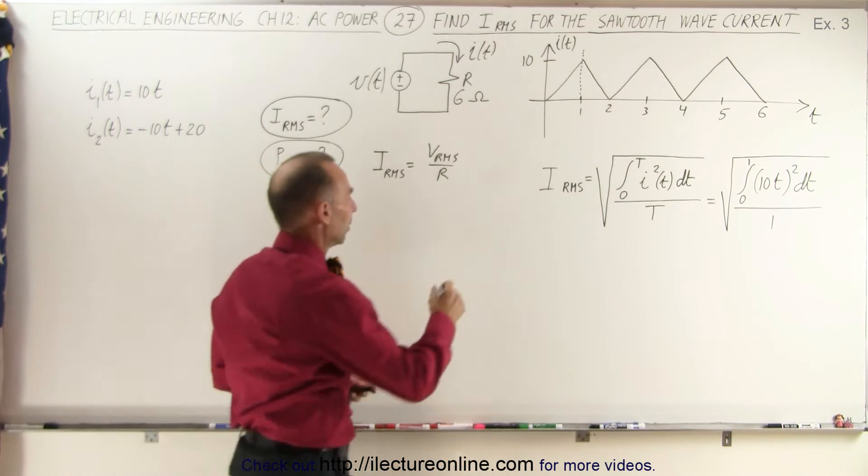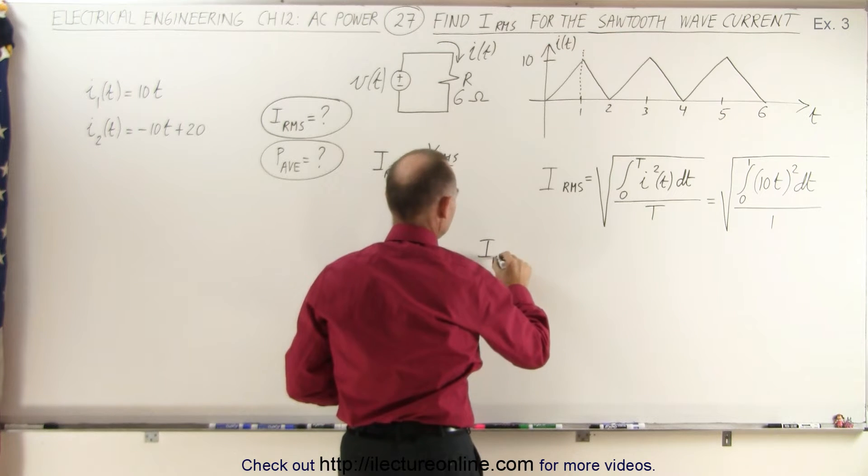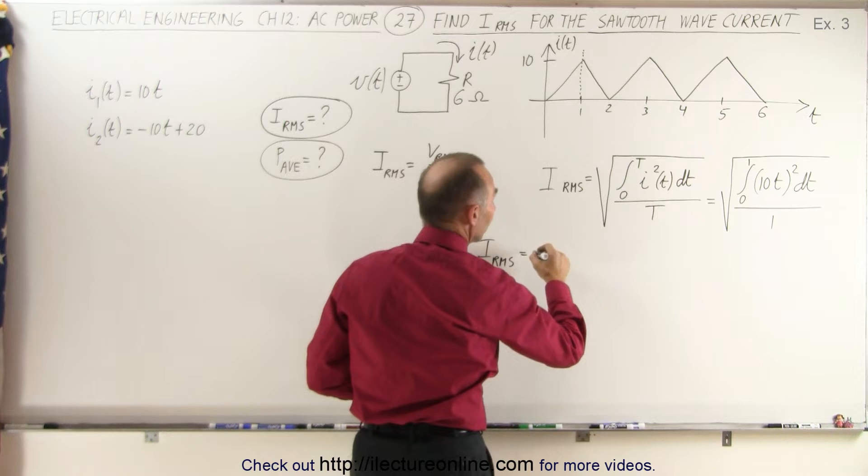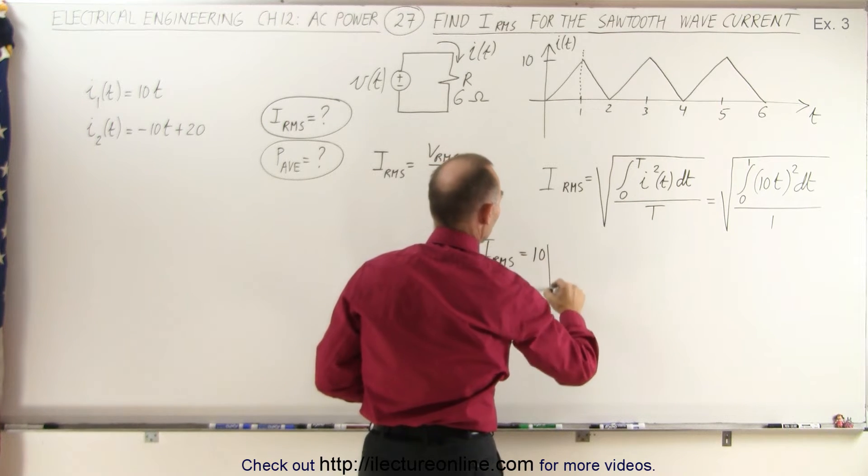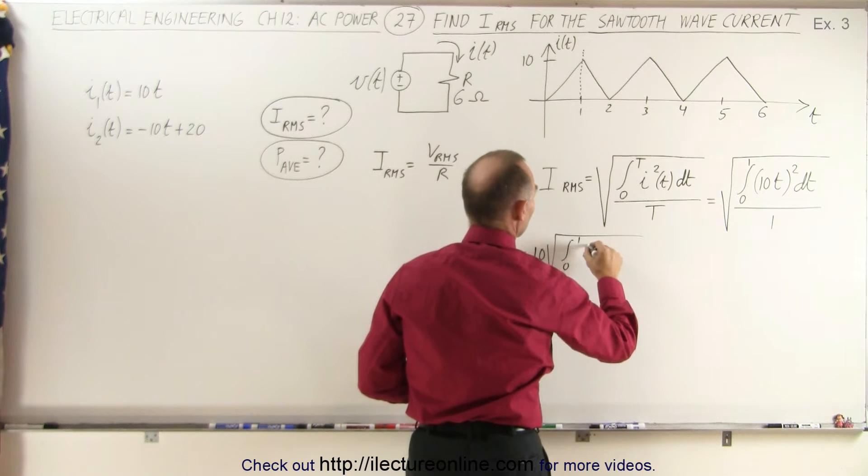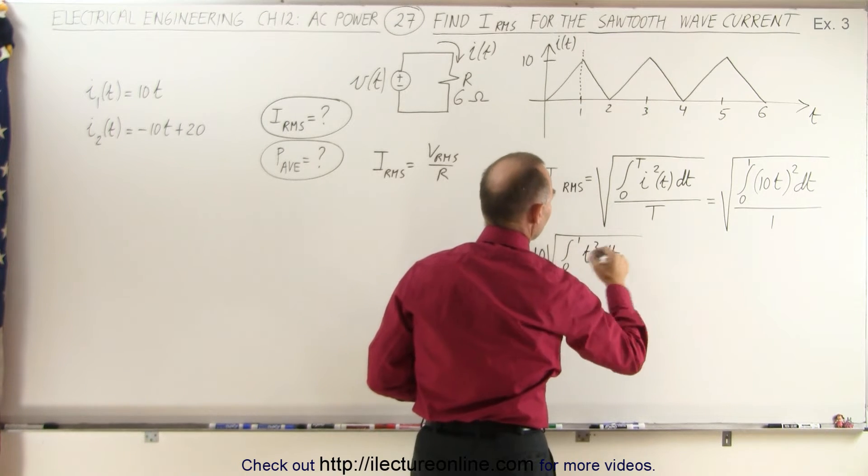So RMS equals—let's pull the 10 out—which gives us 10 times the square root of the integral from zero to one of T squared dT divided by one.